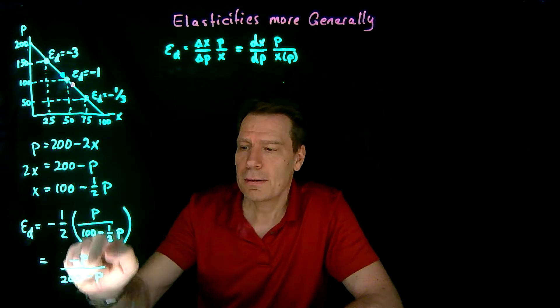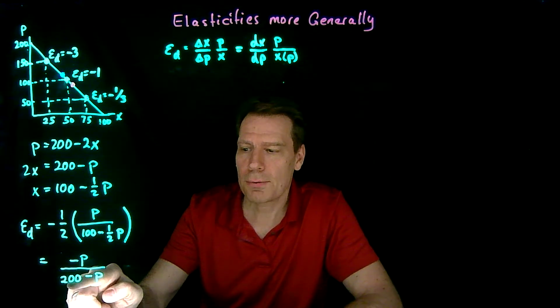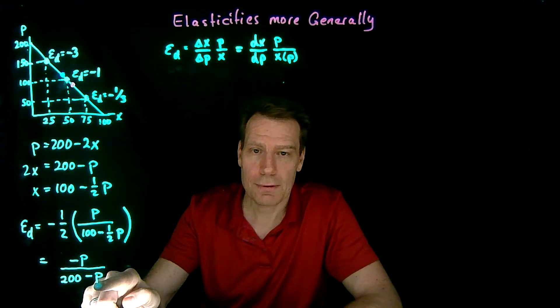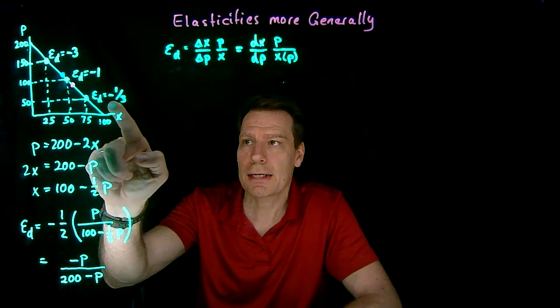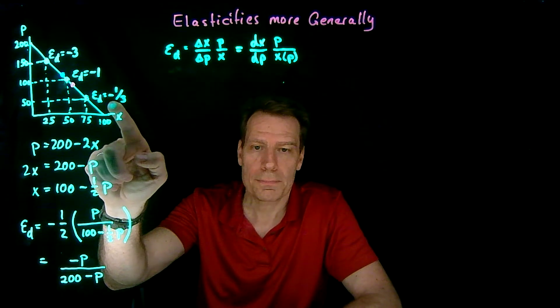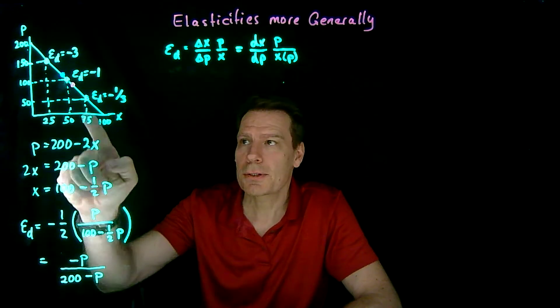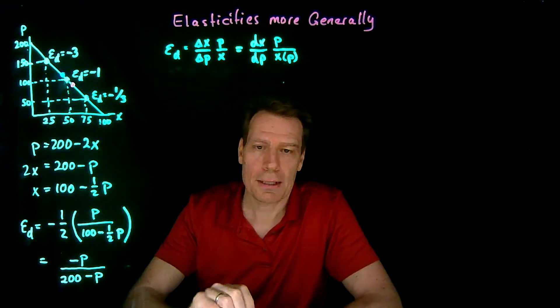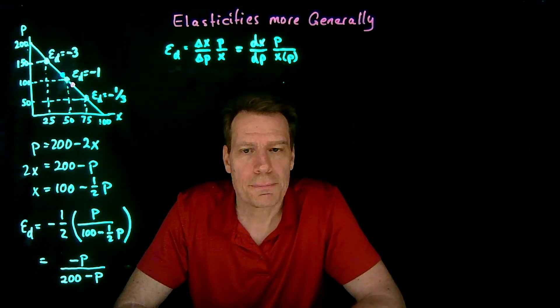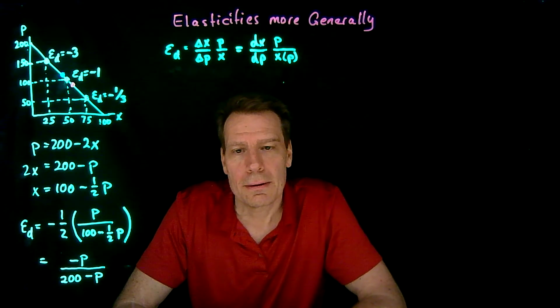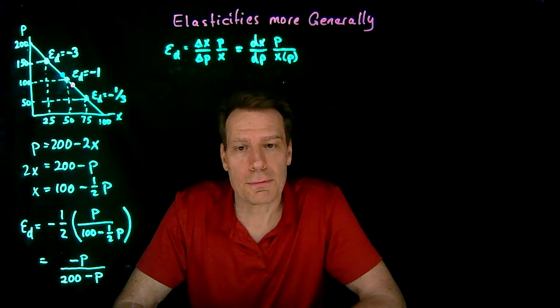Plug in 50, we get minus 50 divided by 200 minus 50. That's 150. So that'll give us the elasticity of minus 1 third. Now we've got a general formula that tells us, for any point on that demand curve, what the price elasticity is. How would that work for more general demand curves?